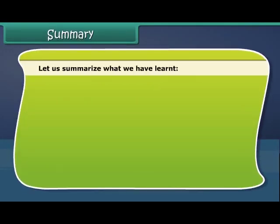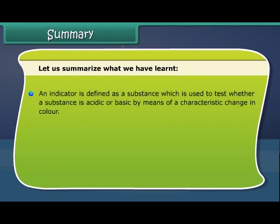Let us summarize what we have learned. An indicator is defined as a substance which is used to test whether a substance is acidic or basic by means of a characteristic change in color.